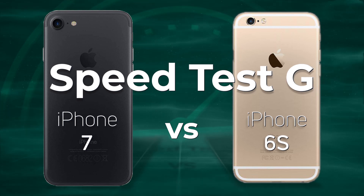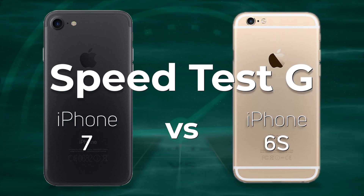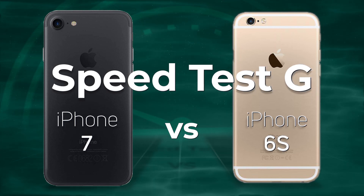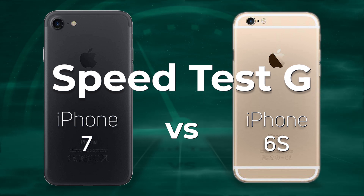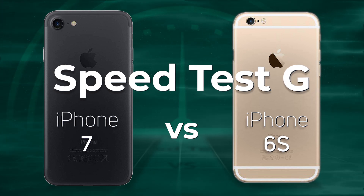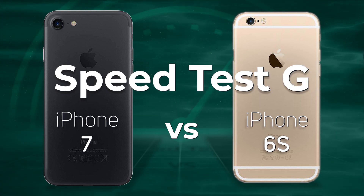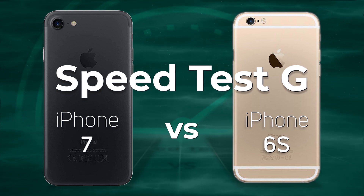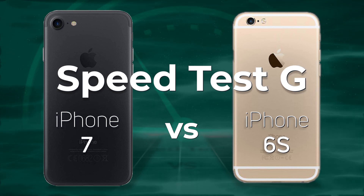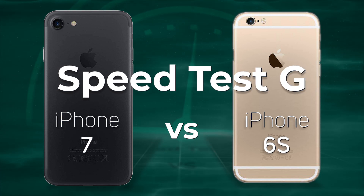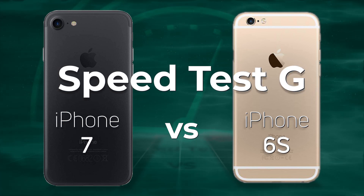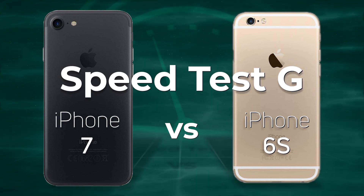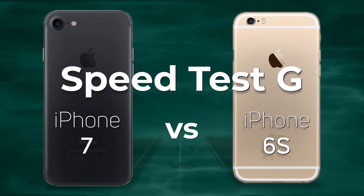There are quite a lot of similarities between the iPhone 7 and the iPhone 6s. They both have the same screen resolution, and they both have two gigabytes of RAM, but one has the Apple A10 Fusion and one has the Apple A9. So how do these two devices do against each other in SpeedTest G? Well, let's find out.